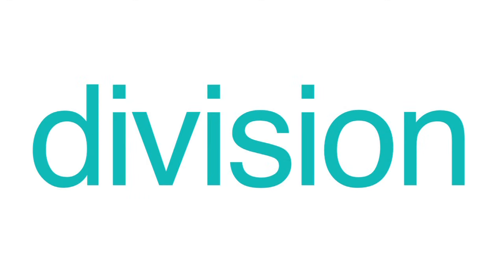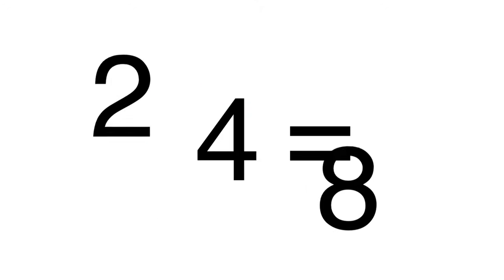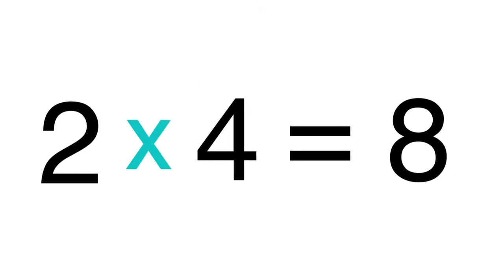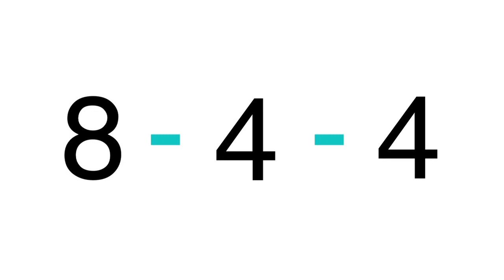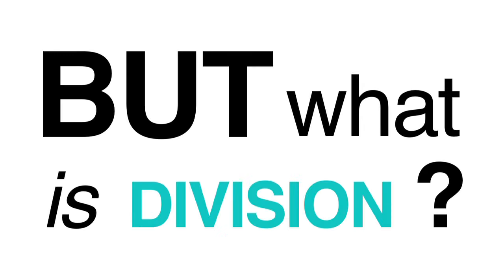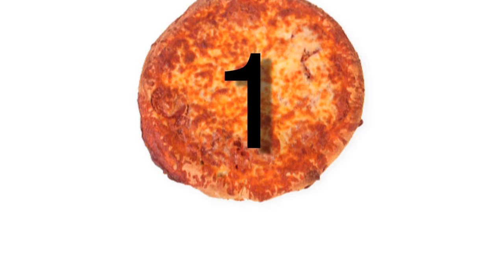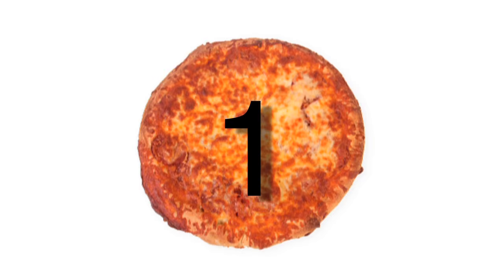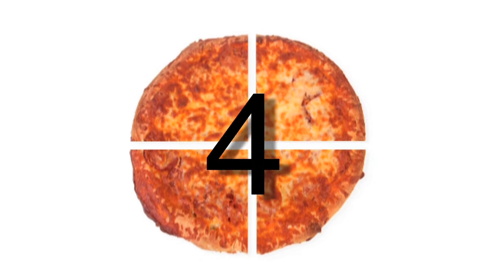Division is related to many other kinds of math. It can be thought of as the opposite of multiplication, or as the repeated subtraction of one number from another. But if you want to think about it on its own, division is just a way to determine how many times a number can be broken down by another number.